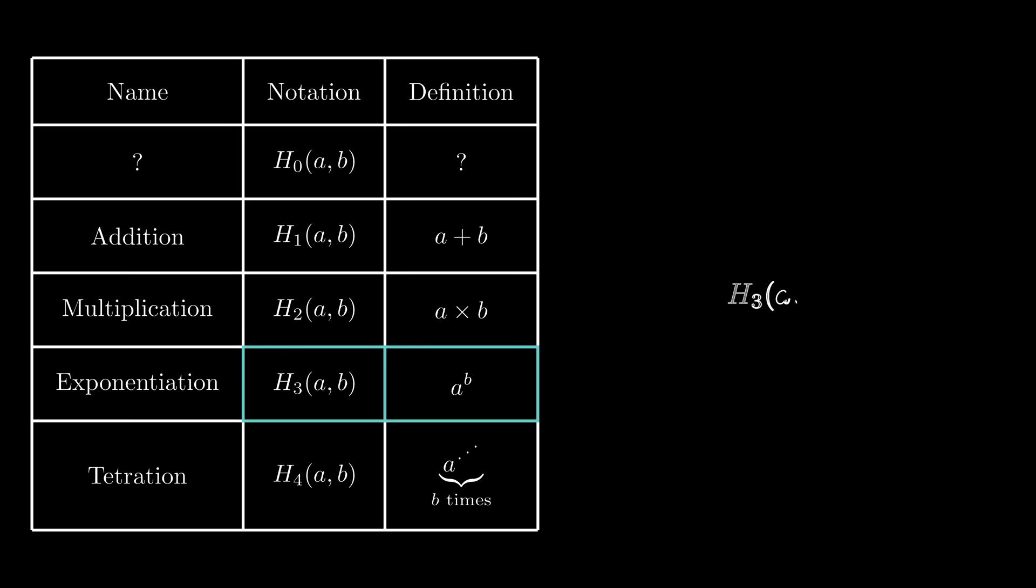To answer these questions, let's start with our familiar exponentiation, a to the power of b. We can create a recursive structure that H3(a,b) equals a multiplies H3(a, b-1). But multiplication is exactly the previous hyperoperator. Therefore, we have H3(a,b) equals H2(a, H3(a, b-1)).